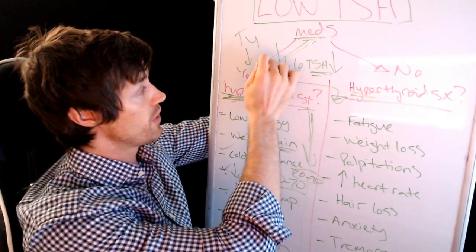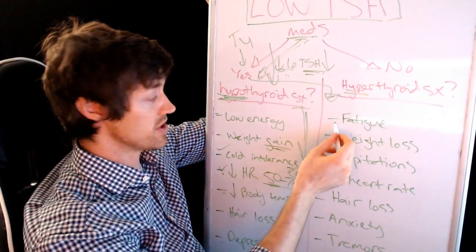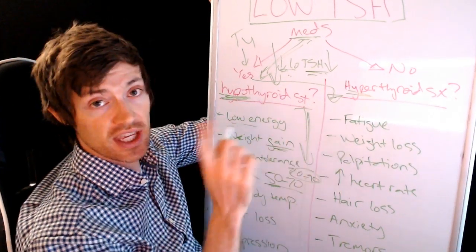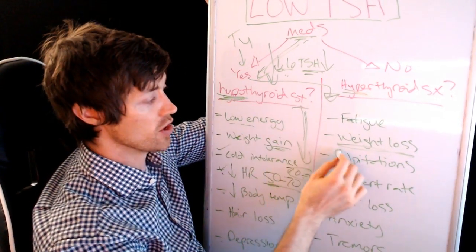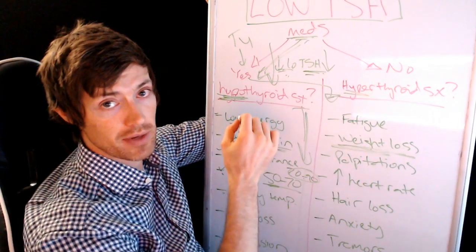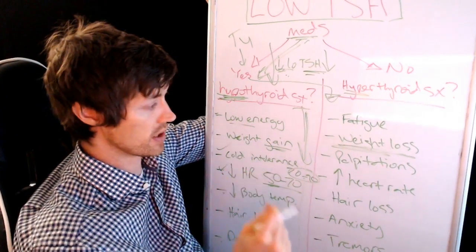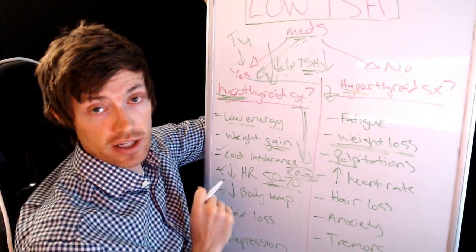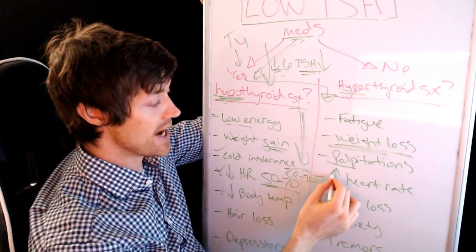So if you fit into that category, then you'd have to look at yourself and say, how do I feel? If you were having fatigue, low energy and fatigue are on both. So this can be kind of confusing. But one of the key differentiators is weight loss. So if you have that low TSH and you're losing weight and you're on thyroid medication, it's a sign that your medication is probably too high or it needs to be tweaked a little bit. You might be experiencing heart palpitations. So your heart is pounding out of your chest and you feel it.